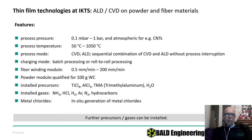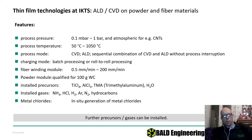We can do atmospheric pressure for carbon nanotubes, and temperatures from 50 to 1050°C. With the fiber winding module we can run up to 200 millimeters per minute. We do a lot of titanium nitride, aluminum oxide, titanium aluminum nitride and similar coatings.